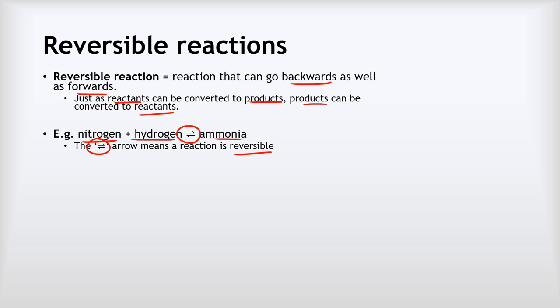Let's look at the way that it's written. It is not a forwards arrow and a backwards arrow, but it is two half arrows — each half bit has just a single part to its head rather than two parts to its head.